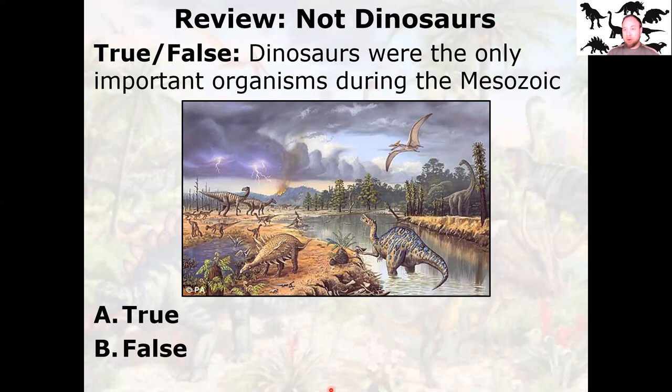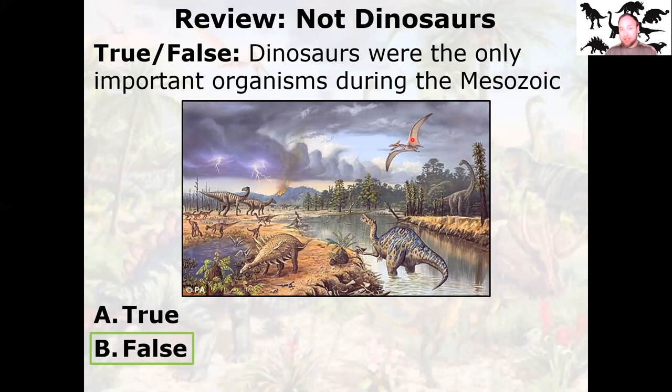Let's review. Last time we talked about the not-dinosaurs — the things that were around during the Mesozoic besides dinosaurs. True or false: dinosaurs were the only important organisms during the Mesozoic. Were dinosaurs the only important thing around? You'll see a lot of paleo art reconstructing the Mesozoic with a lot of dinosaurs, and not much else. It is false. There are a lot of other organisms around during the Mesozoic that are not dinosaurs.